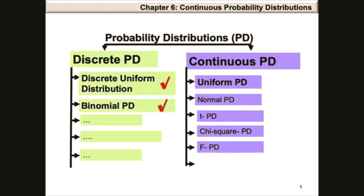The discrete uniform and binomial probability distributions have been covered in chapter 5. We will be taking a look at the uniform probability distribution in this video, which is a continuous probability distribution.